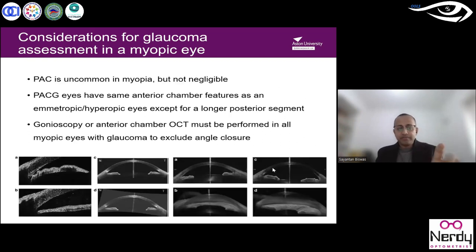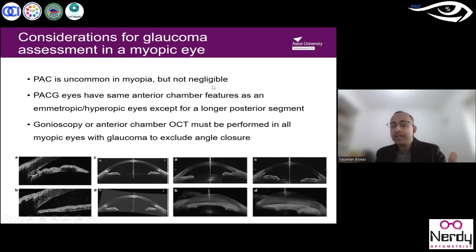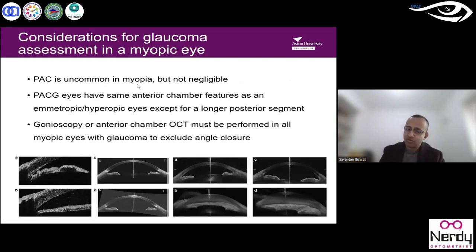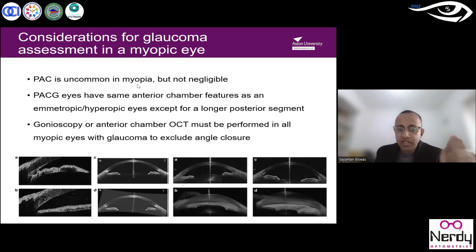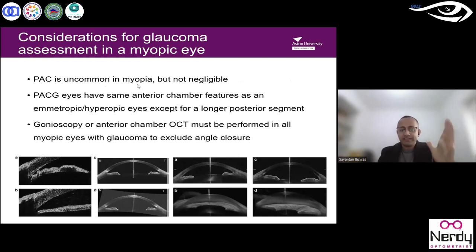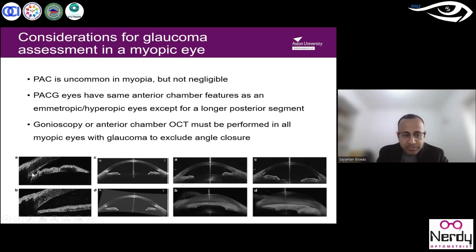Primary angle closure is uncommon in myopia but not negligible — some myopic patients do have angle closure. Angle closure is not always associated with hyperopia; it can occur in myopia. It is important to perform gonioscopy or anterior chamber OCT to confirm whether the angles are open or closed.